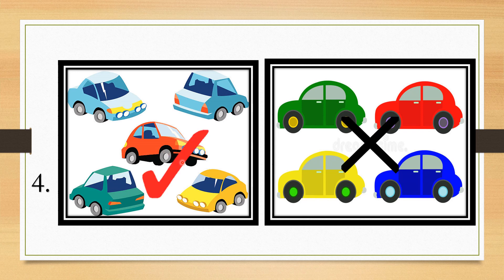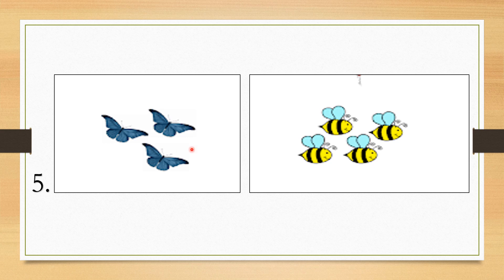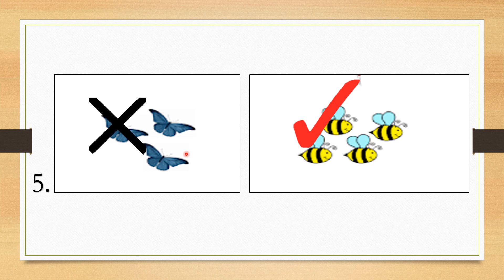Darita sa number 4 — ang lima, mas daghan o mas labaw o gusa kaysa upat. Or mas jutay o gusa ang 4 kaysa lima. Number 5 — mas daghan ang buyog. Ang buyog mas labaw o gusa kaysa kaba-kaba. Kung atong balihon, mas jutay ang tulo kaysa upat. Mas daghan ang upat — mas labaw ang upat o gusa kaysa tulo.